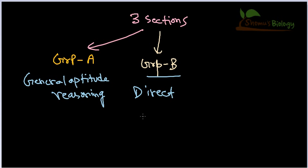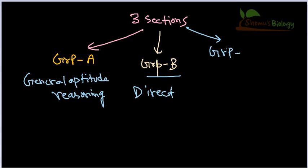They can also ask questions like on which organism extracellular flagella are seen, giving you four options. So Group B has direct questions. Group C is the third and most complicated section, because it checks your analytical power.